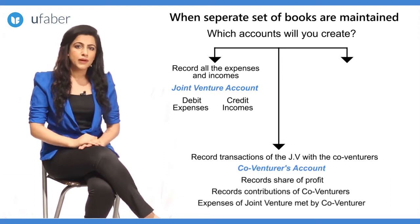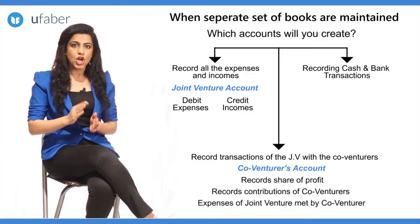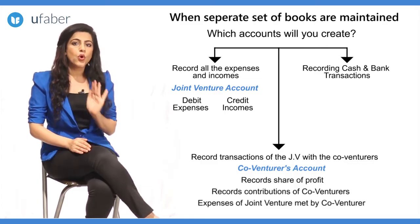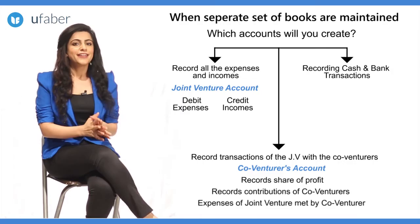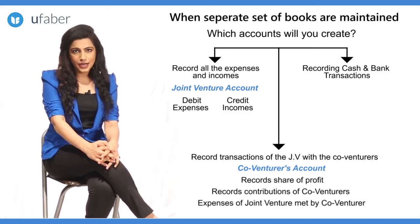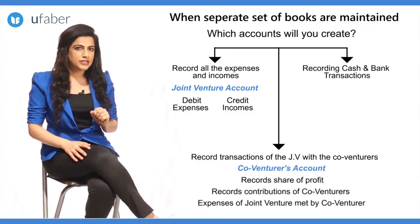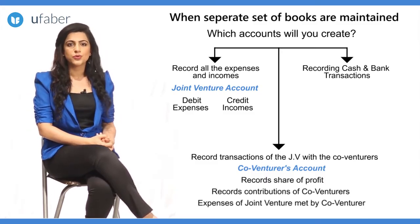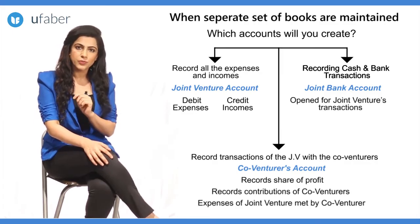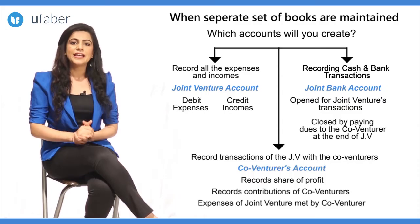Where do we record the second effect for money or cash brought in by X or Y? Money that comes in is either held as cash or deposited to a bank account. In whose bank account do we deposit if all co-venturers contribute? If we say we deposit in X's bank account, will Y contribute his part? To avoid any such disputes, we open a joint bank account of XYJV — a separate bank account opened for the purpose of joint venture transactions. At the end of the venture, this account is closed by paying off the dues to the co-venturers.